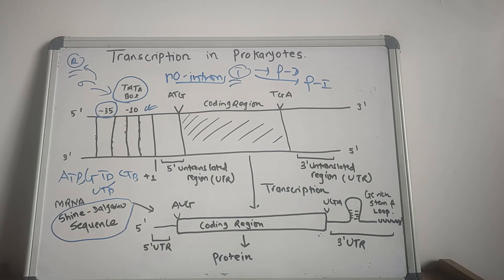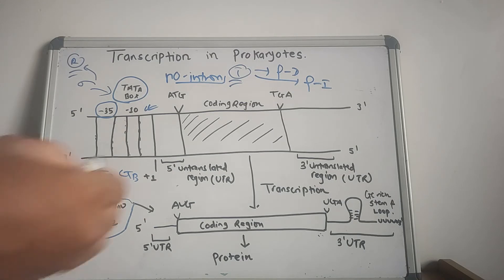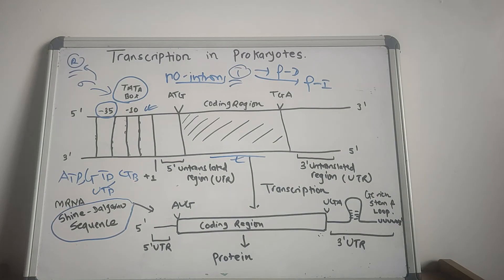The ribosome translates the message in the 5' to 3' direction, synthesizing the protein from the amino terminus to the carboxyl terminus. The mRNA produced from a single gene is monocistronic, meaning it codes for only a single protein. The word cistron is another name for a gene. Some bacterial operons, for example the lactose operon, produce polycistronic messages, where related genes grouped together in the DNA are transcribed as one unit, and the mRNA contains information from several genes and codes for several different proteins.